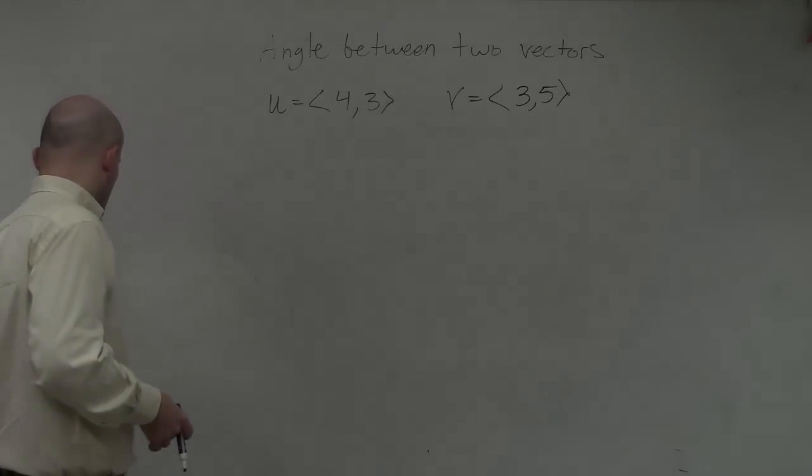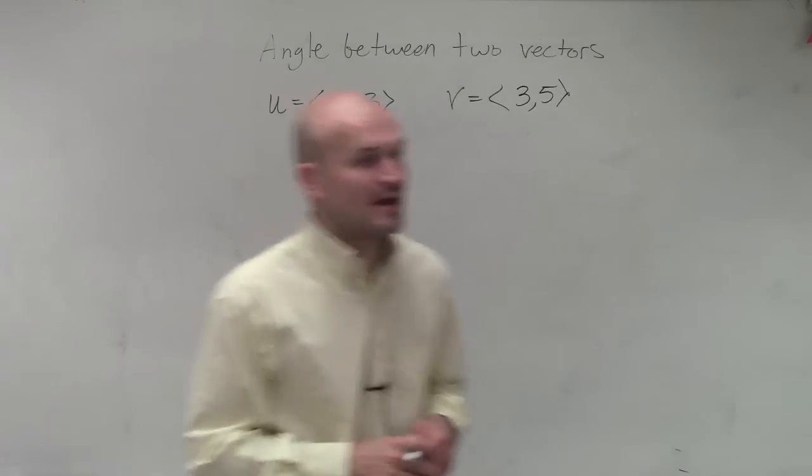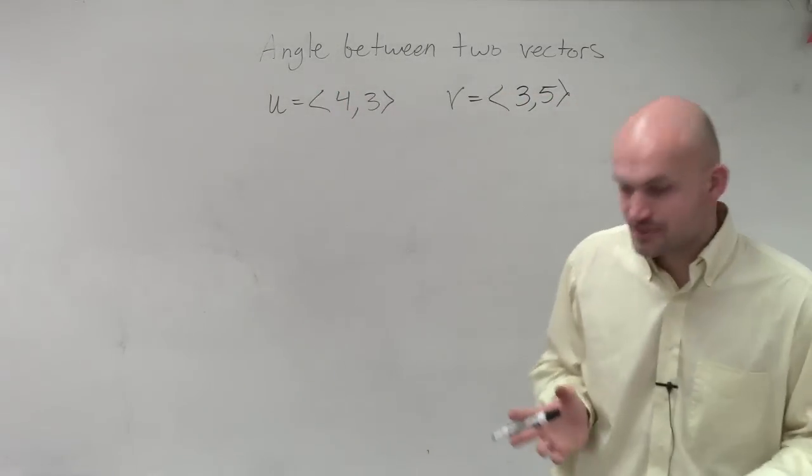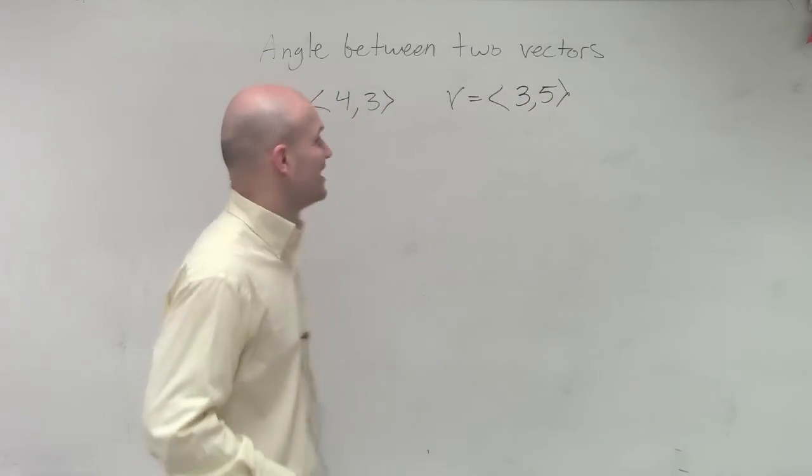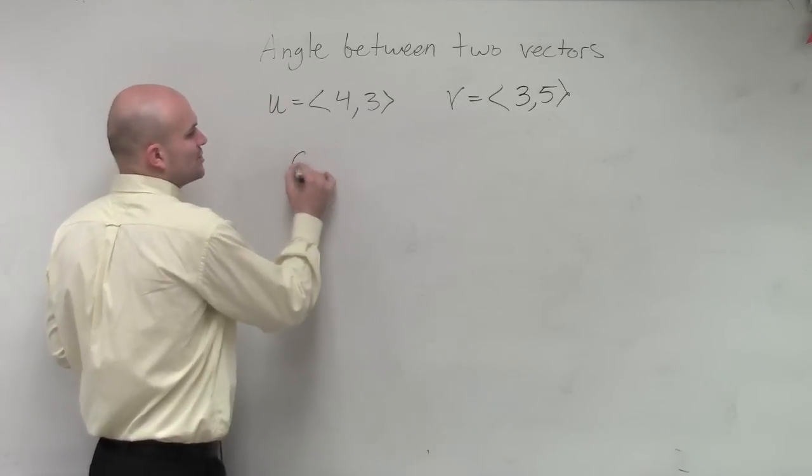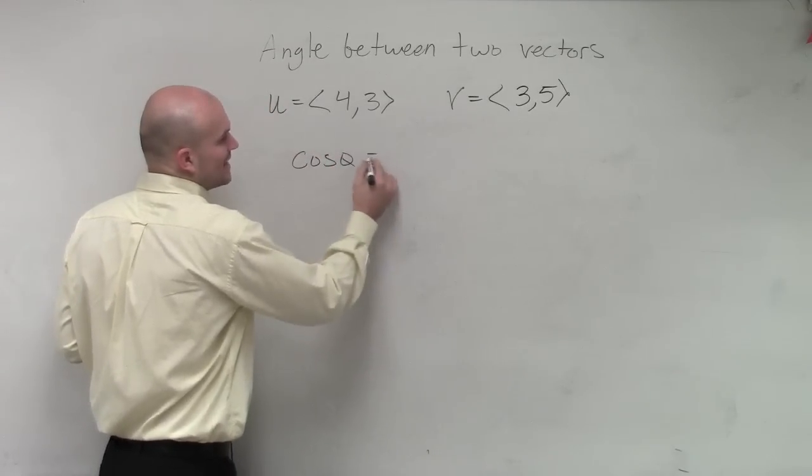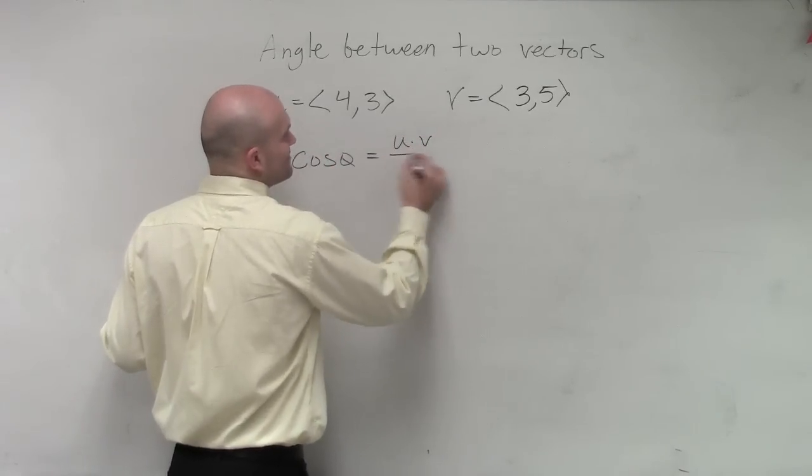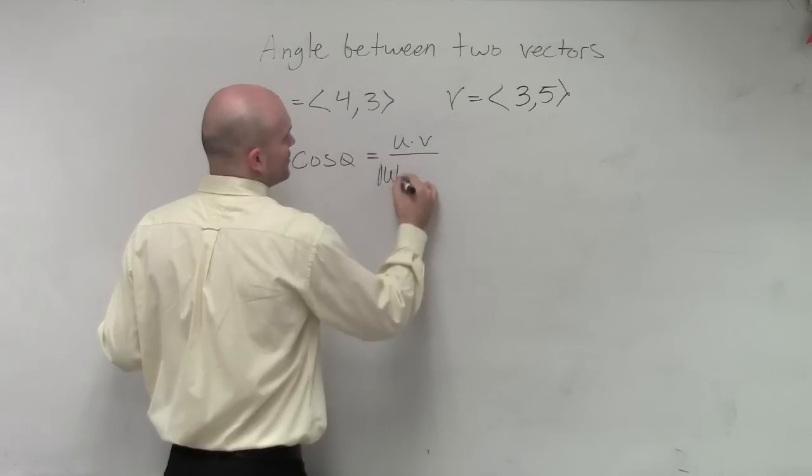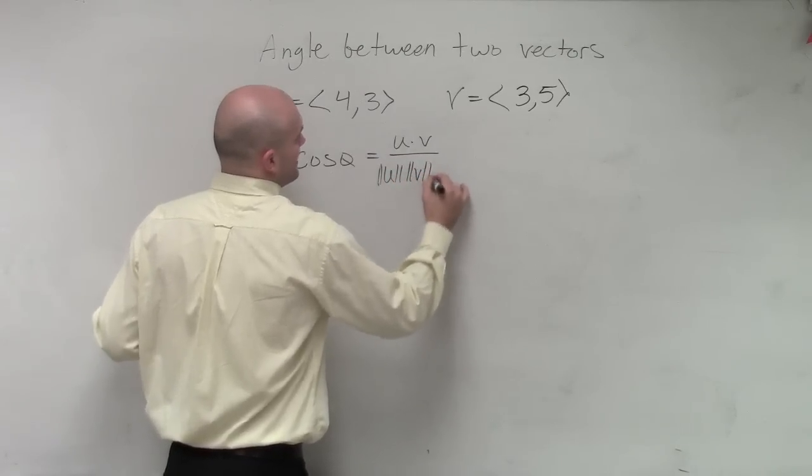Last thing that we'll go through is the angle between two vectors. When you're looking at two vectors and we want to find the angle between them, we're going to use our formula: cosine of theta equals the dot product of u times v divided by the magnitude of u times the magnitude of v.